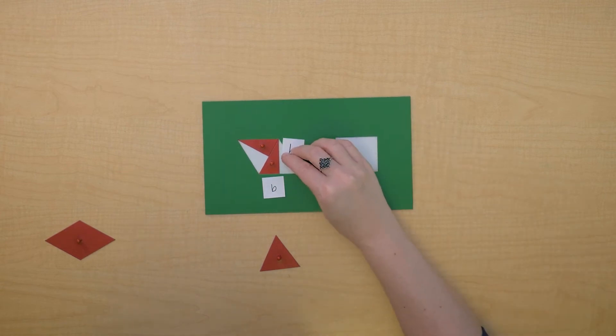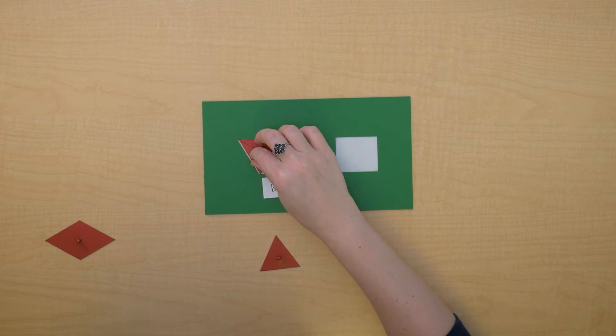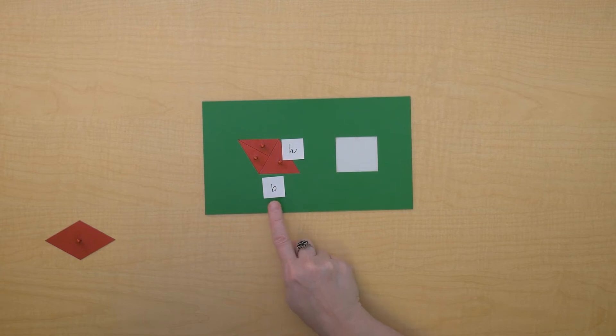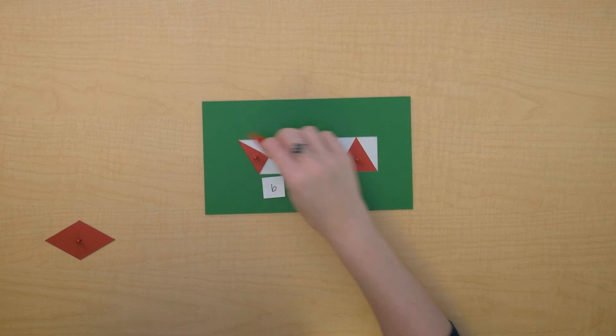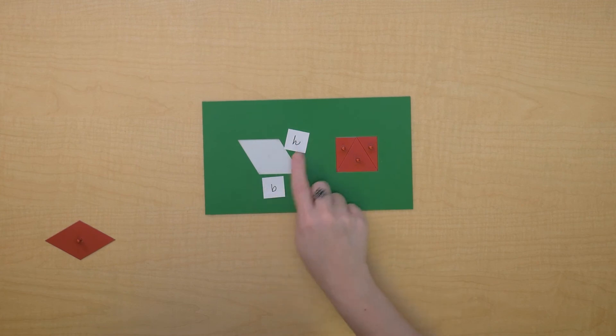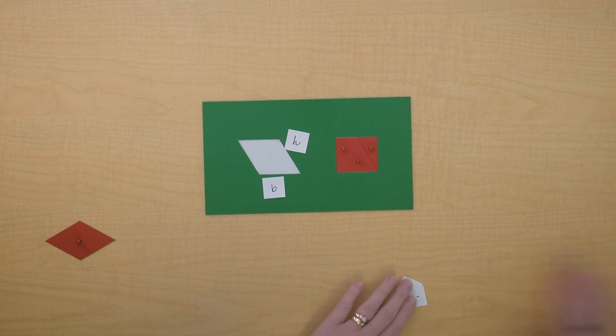So let's see what that means in terms of our rectangle. The base of the rectangle is the same as the base of the rhombus, and the height of the rectangle is the same as the height of the rhombus.